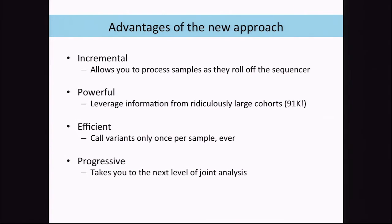The advantages of this are that it's incremental. We can do the processing in real time as samples come off the sequencer — just take each sample, run Haplotype Caller on it, and store the likelihoods. Because of this, we can use massive cohorts that we couldn't fit into memory on a single machine. We can do the 91,000 samples in ExAC, or any larger size cohort that's coming up. It's easy and cheap to do with different cohorts, and efficient because we only need to do the likelihood calculation once per sample ever. We can redo the cohort calling as new samples come in, inexpensively.